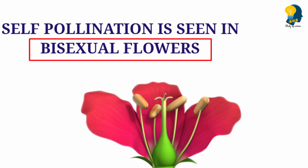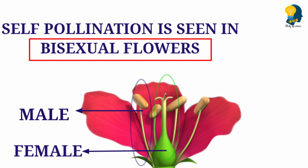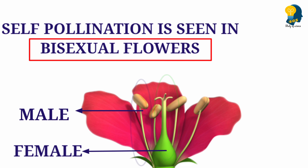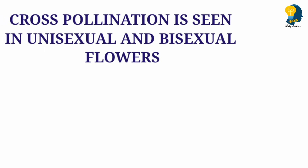In self-pollination, transfer of pollen grains takes place from the anther to stigma. For this to happen, there should be the presence of two different reproductive organs — one male and one female — in the same flower. If both organs are present in the same flower, we call such flowers bisexual flowers. So self-pollination is seen only in bisexual flowers. Cross-pollination, however, can be seen in both unisexual and bisexual flowers.